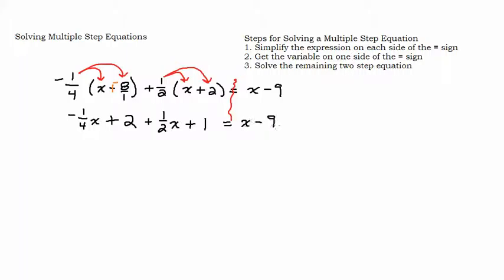We're still on step 1 because we haven't fully simplified the left-hand side — we have like terms to combine. We have x terms and constant terms to combine. To combine the one-half x and negative one-fourth x, we need a common denominator of 4. One-half is the same as two-fourths — multiply the top and bottom by 2 — and then add 2 plus 1, giving 3. That gives us x minus 9 on the right.